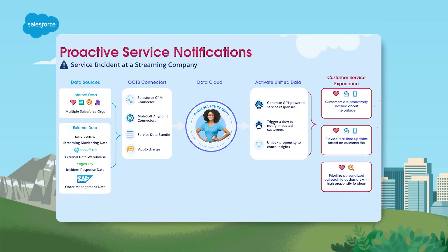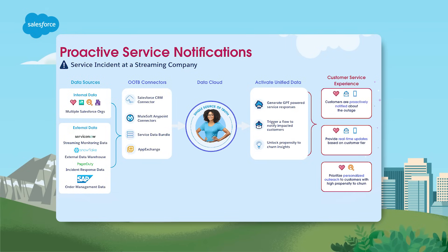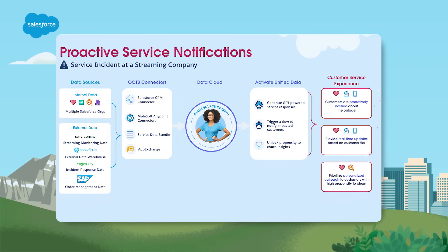The streaming company acts on this unified data to trigger a flow that proactively notifies impacted customers on their preferred channel. Using Einstein GPT, the streaming company automates customer notifications to save time for their service agents. They tailor responses and support actions throughout the incident, and this is all thanks to Data Cloud's full view of the customer.